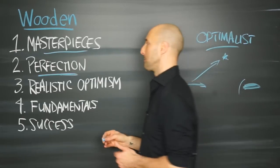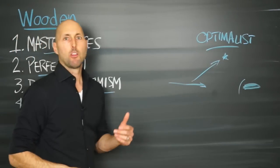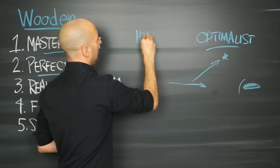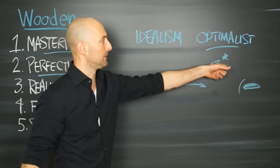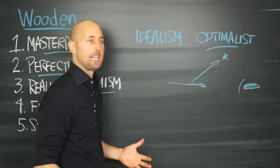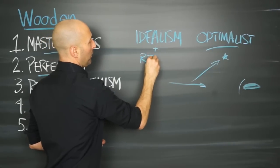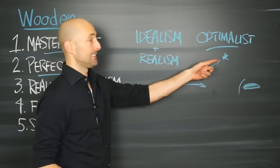And part of that is realistic optimism. So realistic optimism has three parts, according to John Wooden. Number one, we have idealism. We have those ideals, the distant stars that are guiding us. Then we have realism, which is what we just talked about.